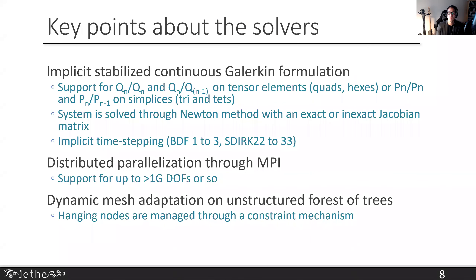Some key points about the solver: it uses an implicit stabilized continuous Galerkin formulation, supporting Q_N and Q_{N-1} elements, as well as tensor elements — quads or simplex elements like triangles and tetrahedra. We use Newton's method with exact or inexact Jacobian matrices. Everything shown uses implicit time stepping — either backward differencing schemes of order one to three, or single-diagonal implicit Runge-Kutta schemes with two or three stages. The solver supports distributed parallelization via MPI, up to a billion degrees of freedom, and has dynamic mesh adaptation capabilities.